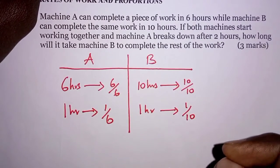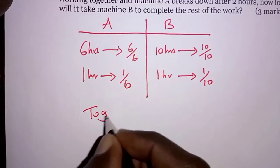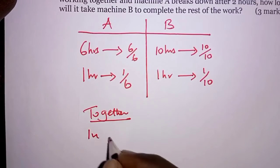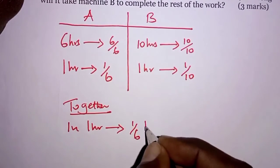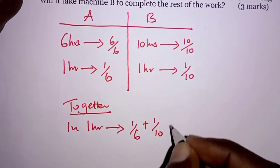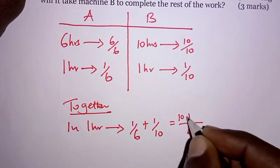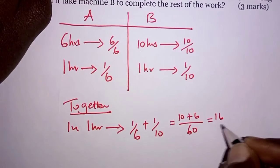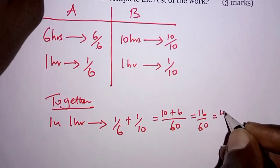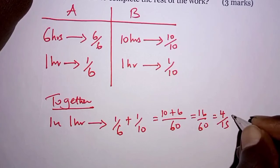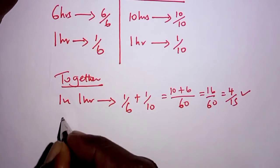When they are meant to work together, in one hour we have Machine A which does 1/6 plus Machine B which does 1/10. Using 60 as the common denominator, that gives us 10 plus 6, which is 16/60. This simplifies to 4/15. So 4/15 is the fraction of work done in one hour when they are working together.